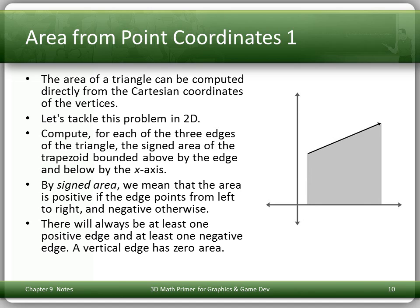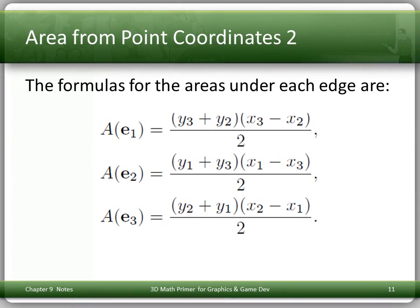We can also compute the area of a triangle directly from the Cartesian coordinates of the vertices. In 2D, we compute for each edge the signed area of the trapezoid bounded above by the edge and below by the x-axis. The area is positive if the edge points from left to right and negative otherwise. By summing the signed areas of the three trapezoids, we arrive at the area of the triangle.